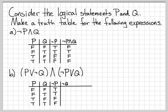Let's go ahead and make a column for 'not Q', since I have a 'not Q' in the expression. To fill in the column for 'not Q', I look at the Q column and negate it. So a false turns into a true, a true turns into a false, a false turns into a true, and a true turns into a false. Now we have a column for 'not Q'.